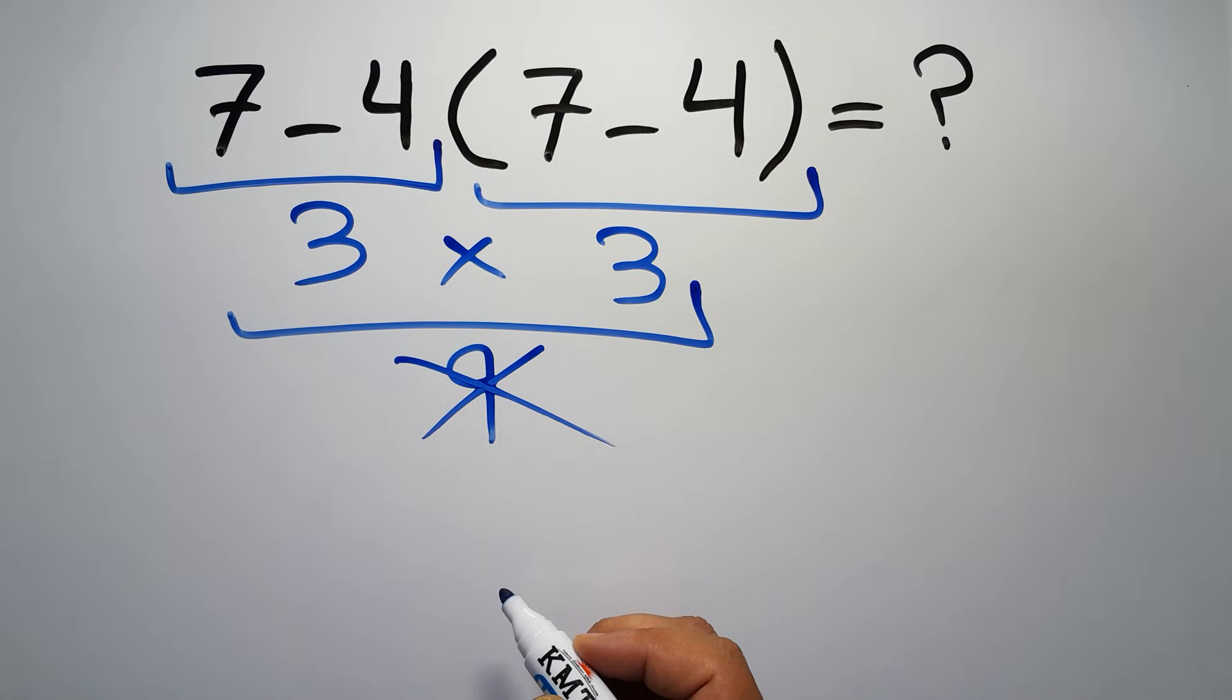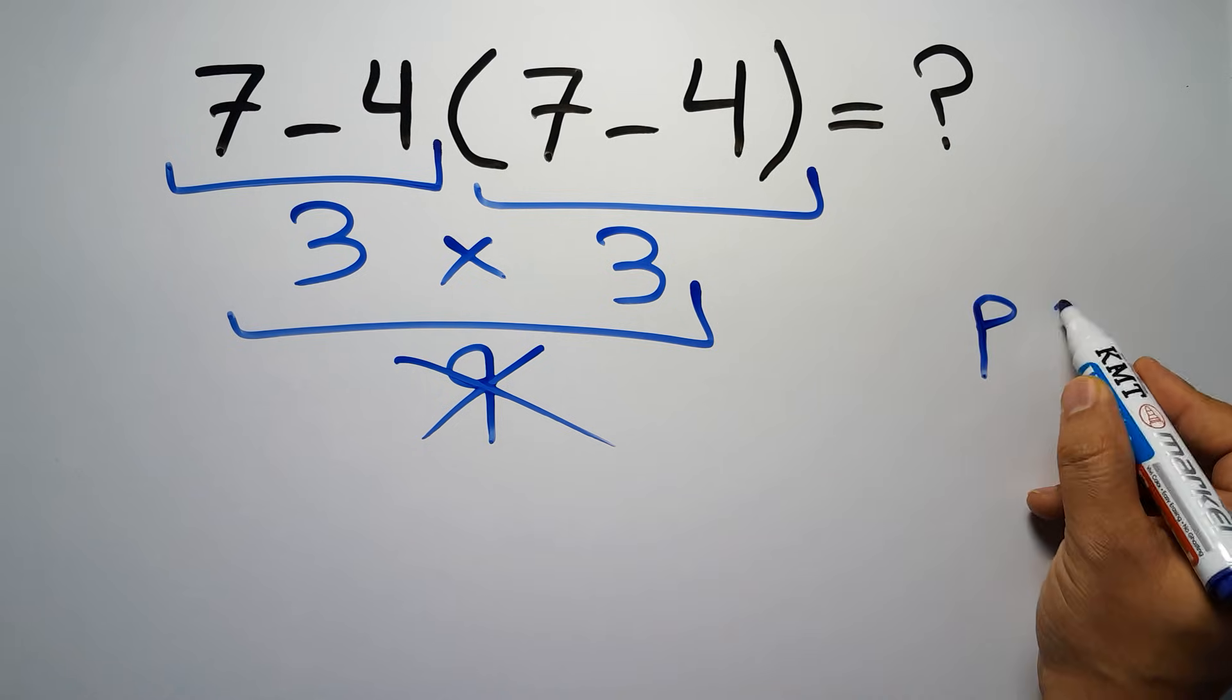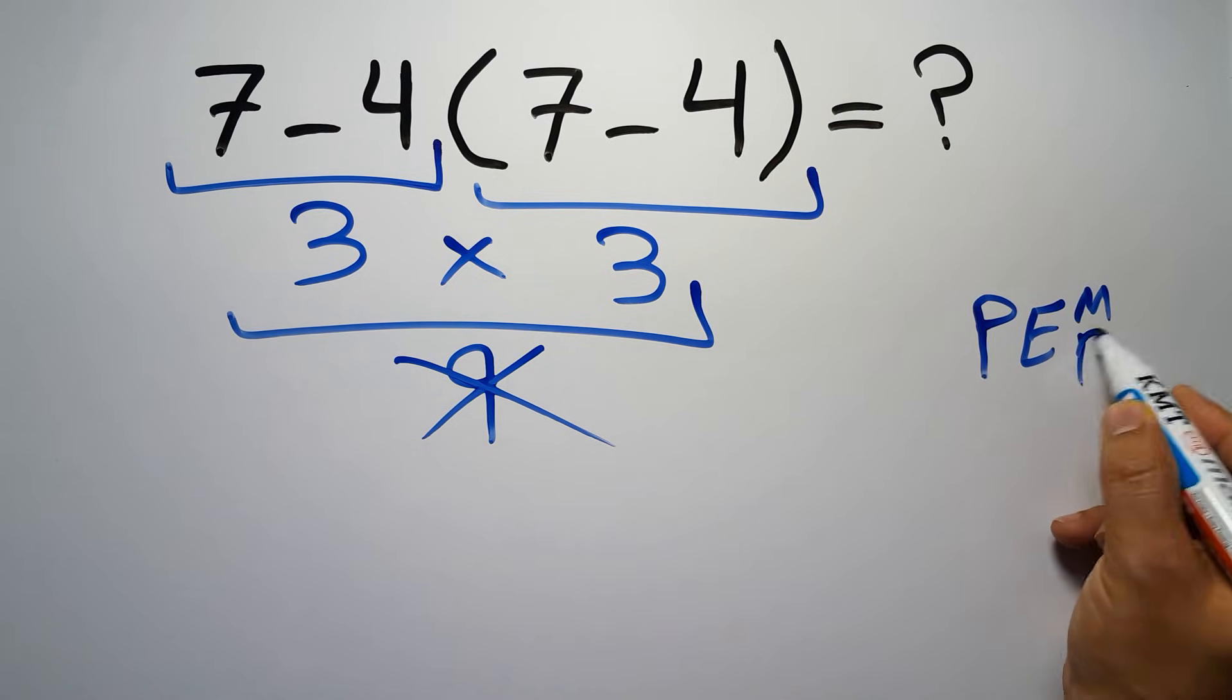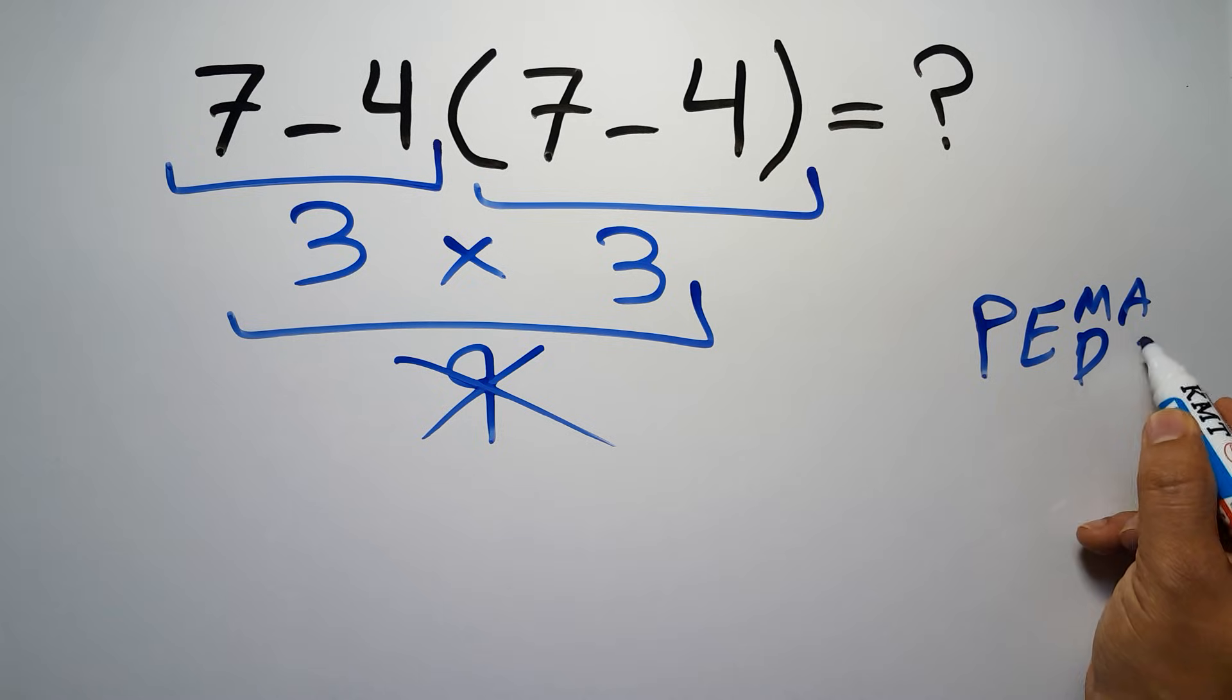because according to the order of operations, first we have to do parentheses, then exponents, then multiplication or division, and finally addition or subtraction.